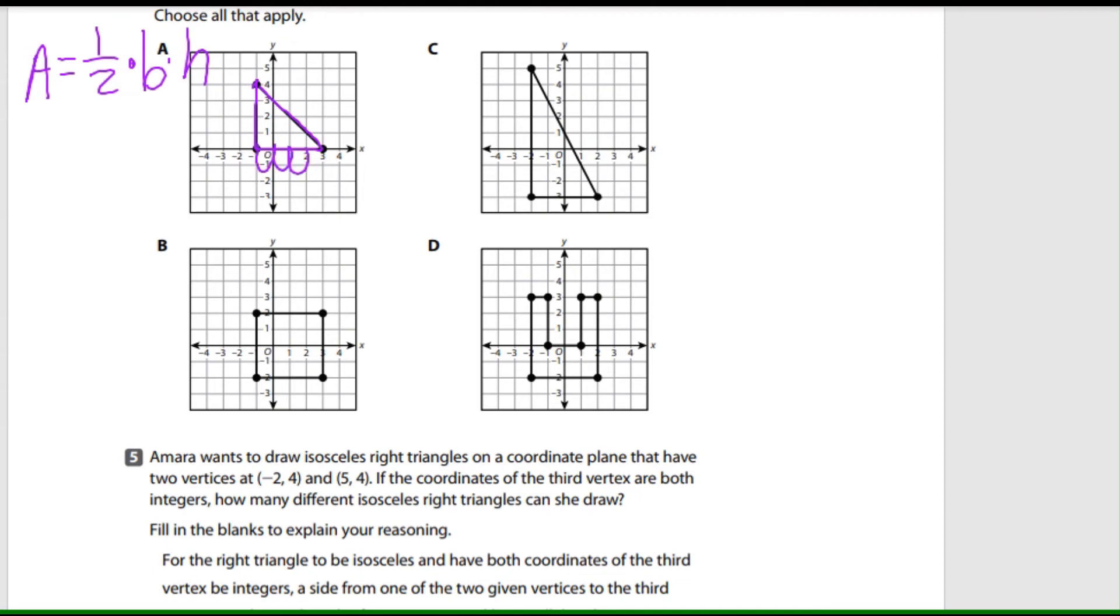Area equals one half times base times height. Area equals one half times the base times the height, because a triangle is half the area of a rectangle. So what is the base? One, two, three, four units. So one half times four times the height. One, two, three, four. Half of four is two, times four is eight. So the area of this figure is eight.